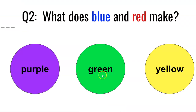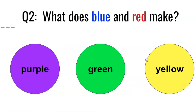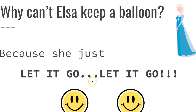Then I'm going to press the next button once again. What does blue and red make? Sorry for any grammatical errors here — I threw this together in about 10 minutes. We have purple, green, yellow. Let's go ahead and pick green. Now that's incorrect. Back button — purple. That is correct, you've earned your second smiley. And why can't Elsa keep a balloon? Because she let it go, let it go. And that is the basic structure of the quiz.